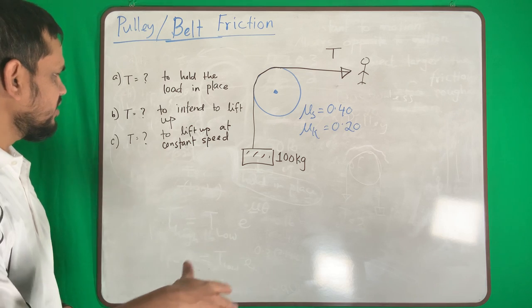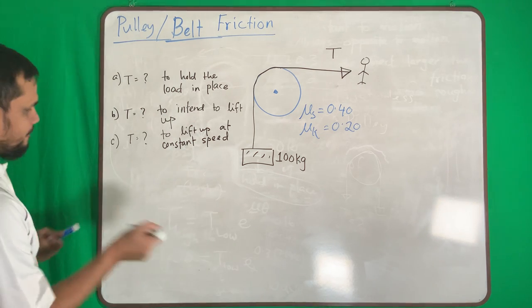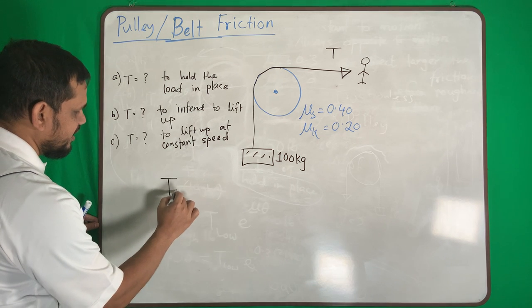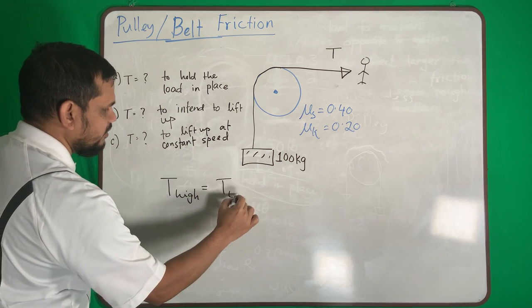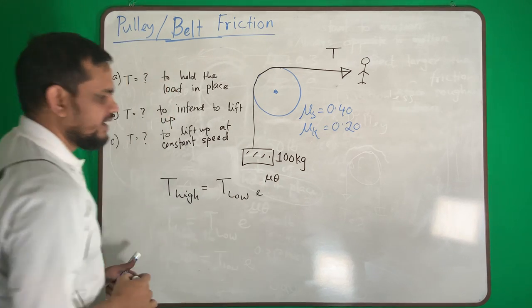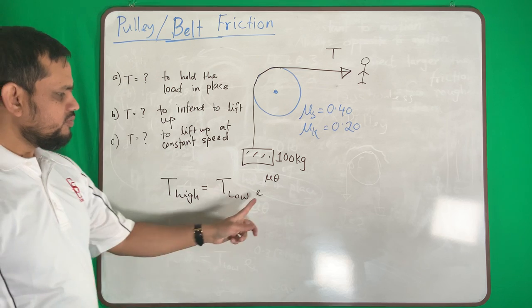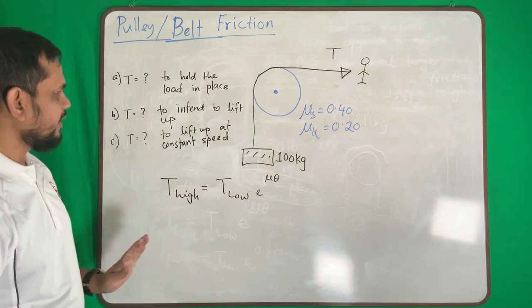We will do it in dynamics class, not yet. So what is our equation to solve T? T high equals T low times e to the power mu theta. This means exponential—in your calculator, exp.